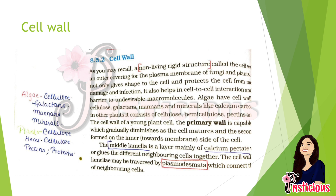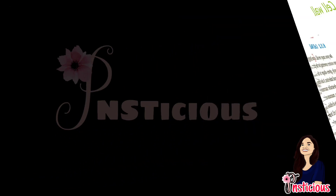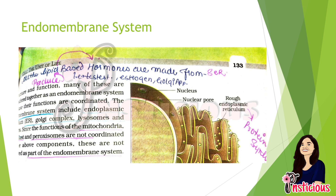The primary wall is capable of growth, which gradually diminishes as the cell matures. The secondary wall is formed on the inner or membrane side of the cell. The middle lamella is mainly formed of calcium pectate, which holds all neighboring cells together. The cell wall and middle lamella may be traversed by plasmodesmata. Now let's come to the endomembrane system.